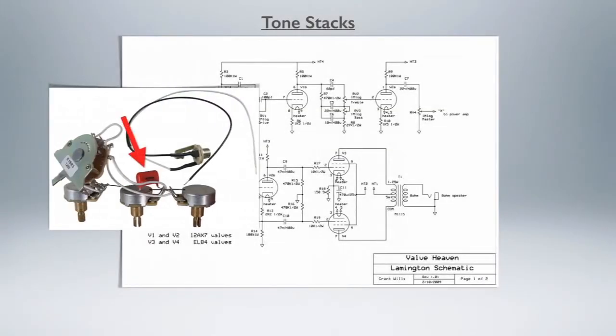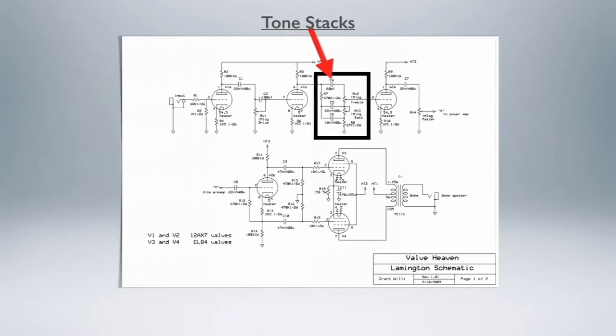Similar to how a tone roll-off works on a guitar, the internal electronics rolling off those high frequencies by shunting them to ground using a simple capacitor, amps can do the same thing. But instead of doing it just to your top end, they can do it to your tops and middles and bottoms, and various other bands as well.